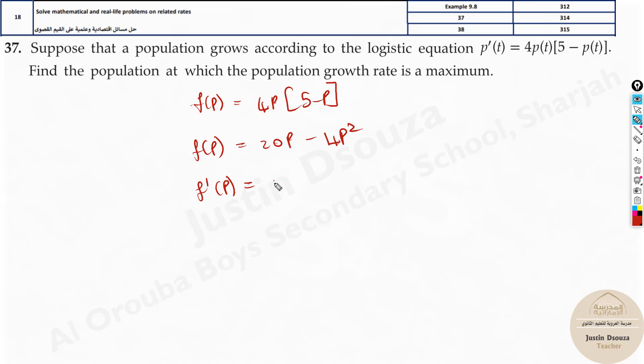Find the f prime. It will be 20 minus 8p. This is it. Now you can find the critical number by making this equal to 0.